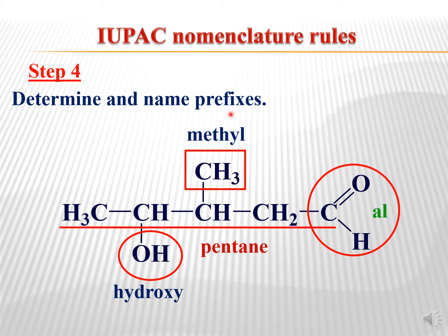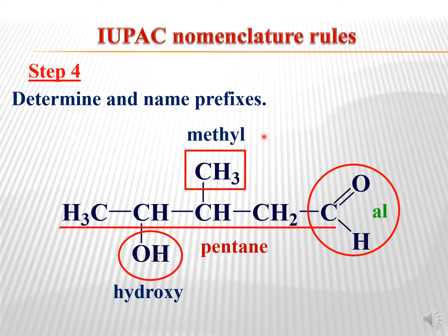The fourth step is to determine and name the prefix. Here you can see two functional groups — hydroxy and methyl — while the aldehyde is already the principal functional group. There are 5 carbons present and a single bond in this structure, so the parent name becomes 'pentane' (pent + ane), because this structure does not have any double or triple bond, meaning it is an alkane derivative.